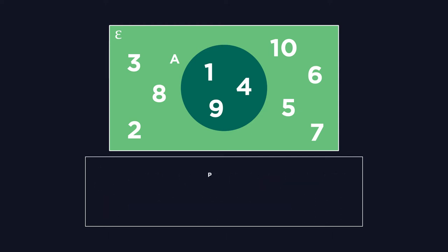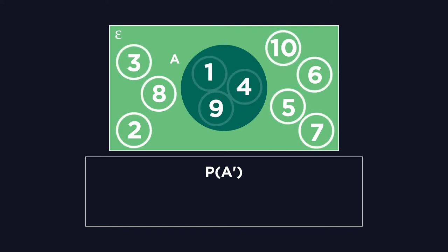From this, try and find the probability of not being in A. Pause the video and have a go. The probability of not being in A means not within the set A. There are 7 values outside set A, with 10 in the universal set. Therefore, the probability of picking one of these is 7 over 10.